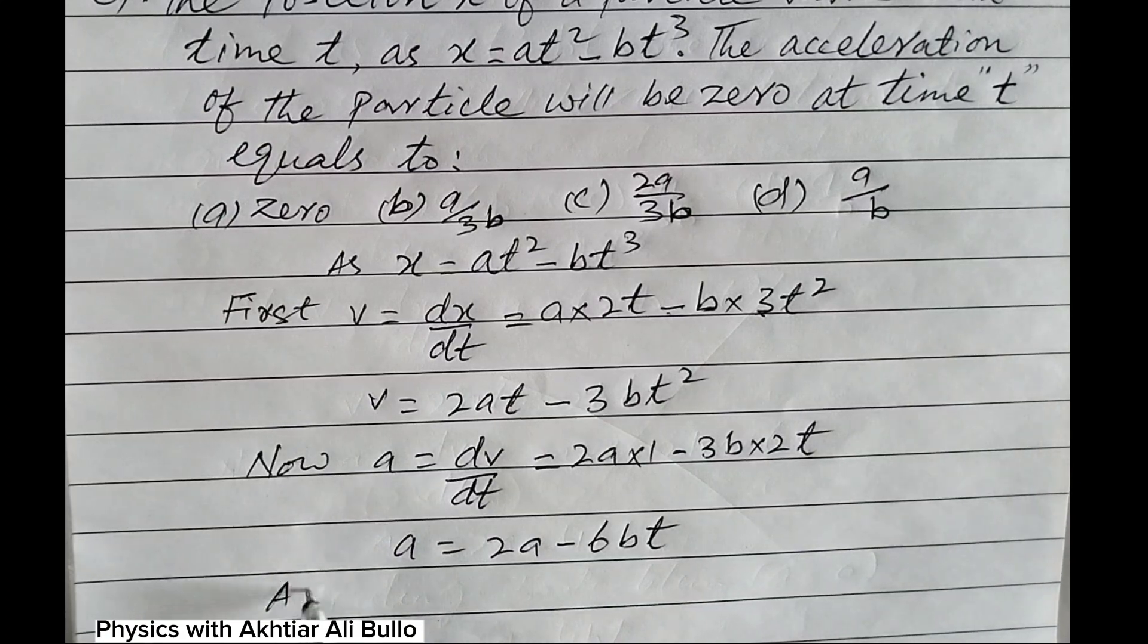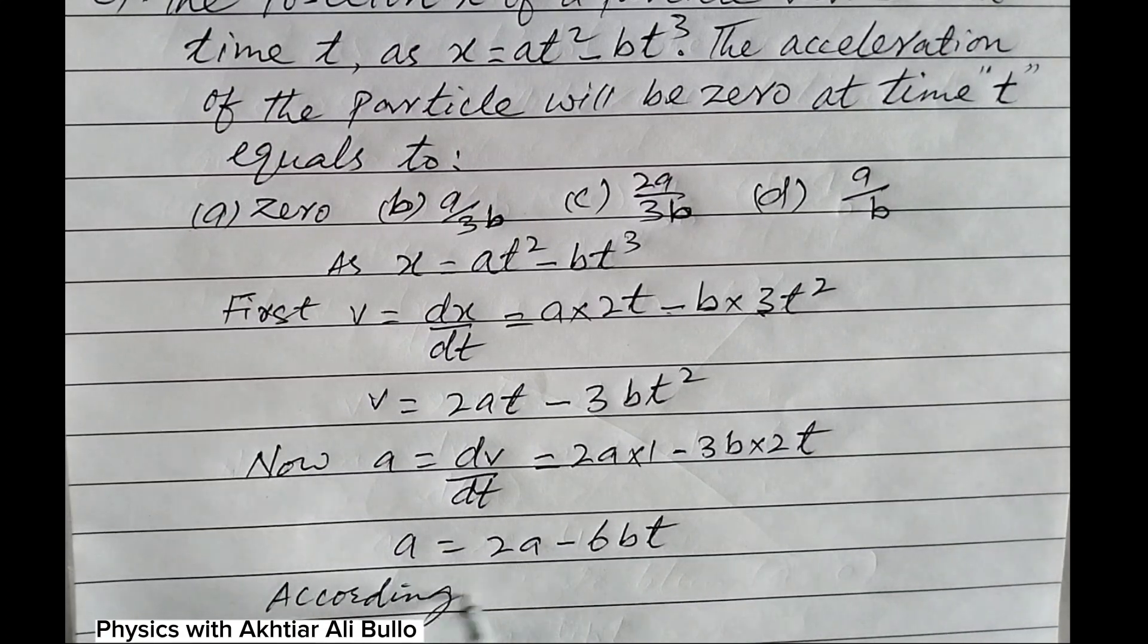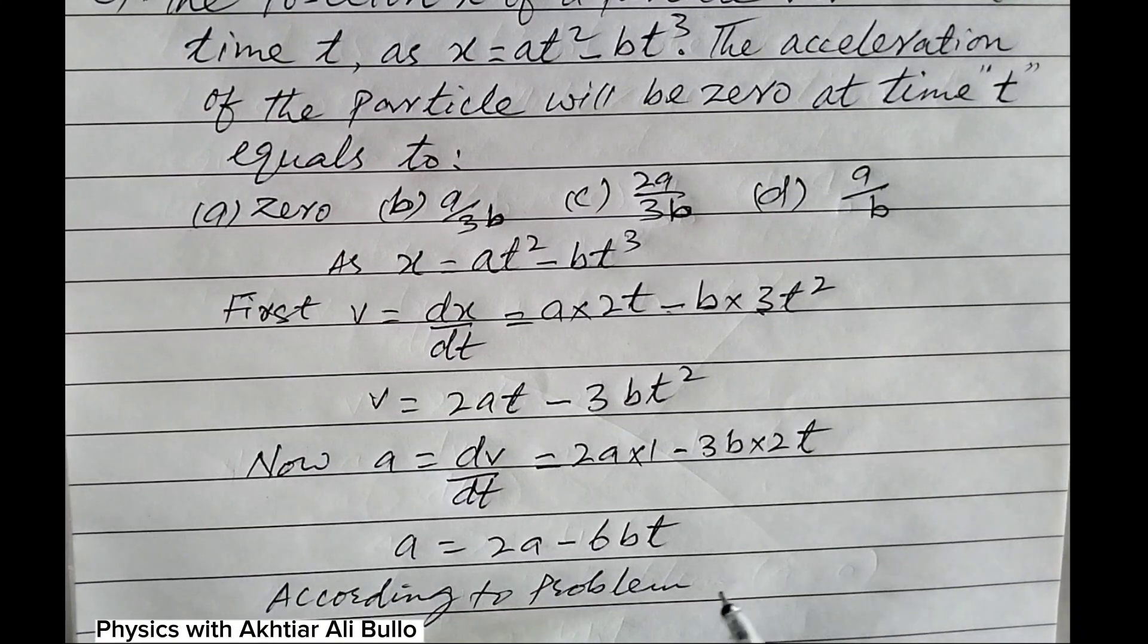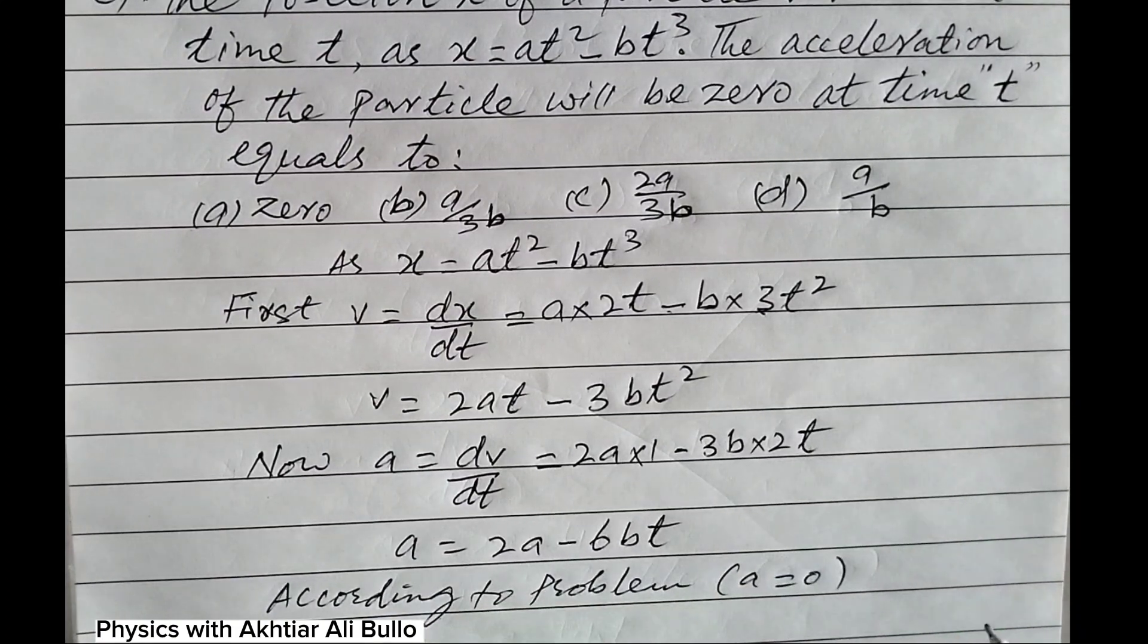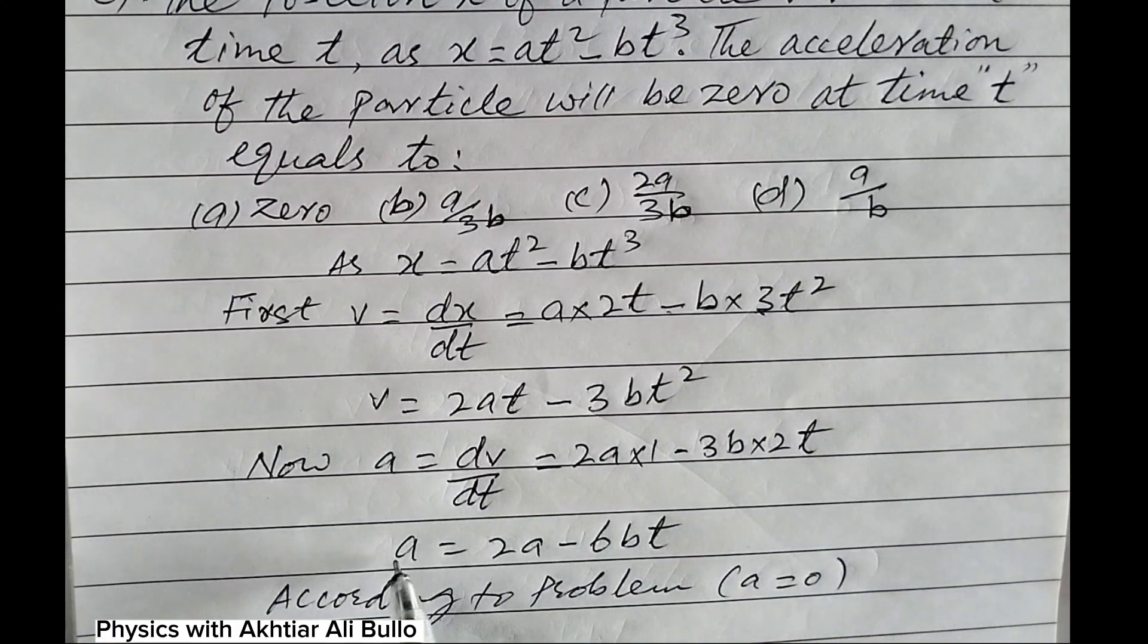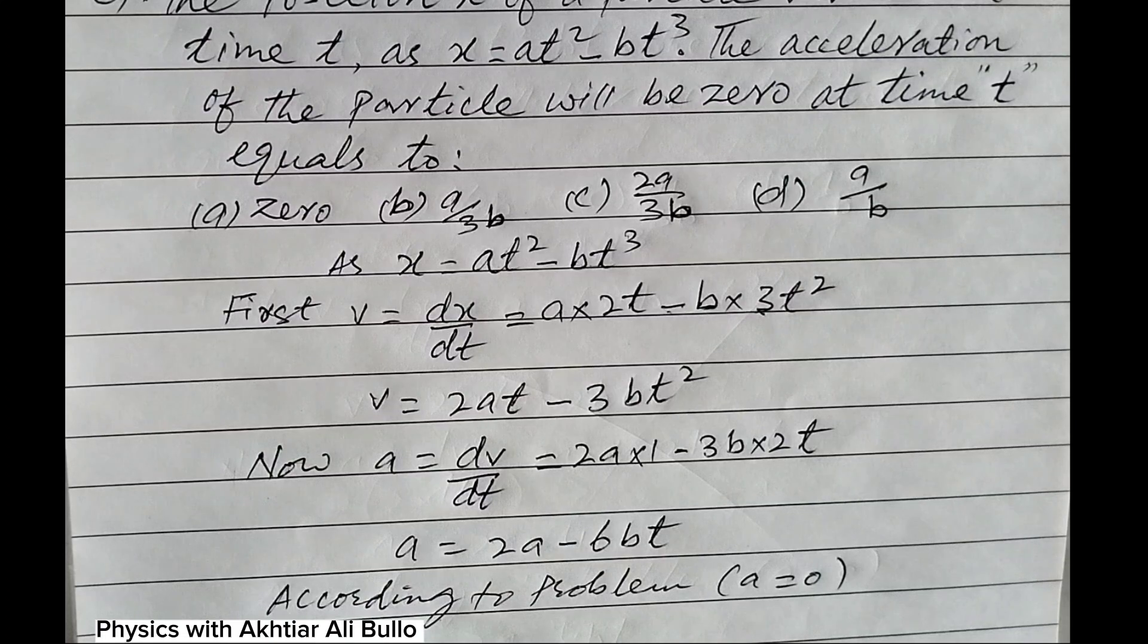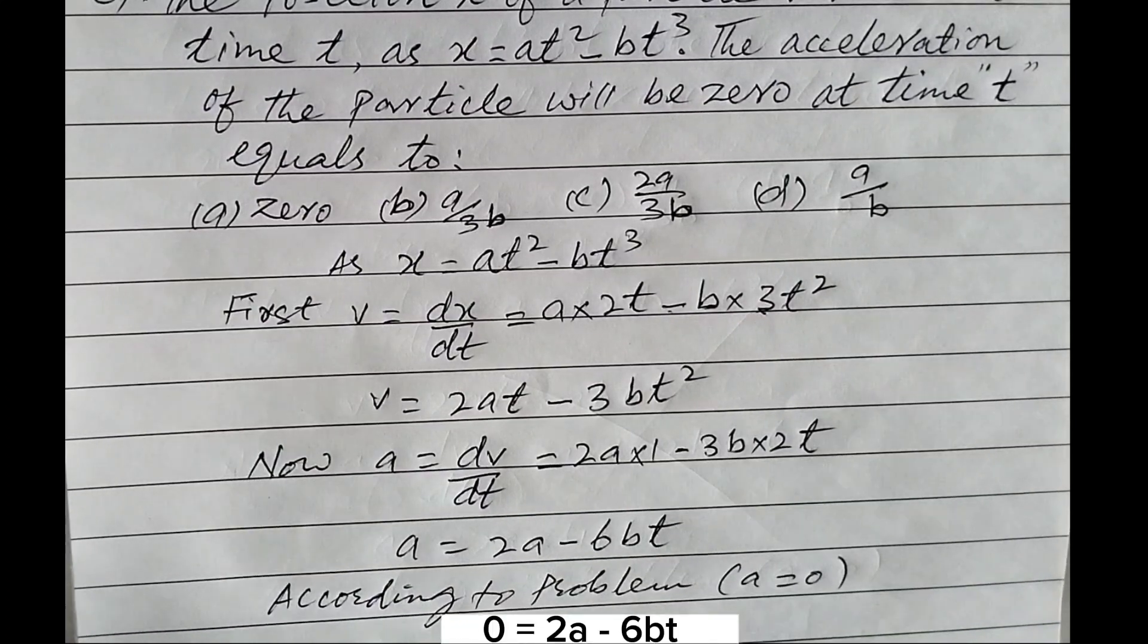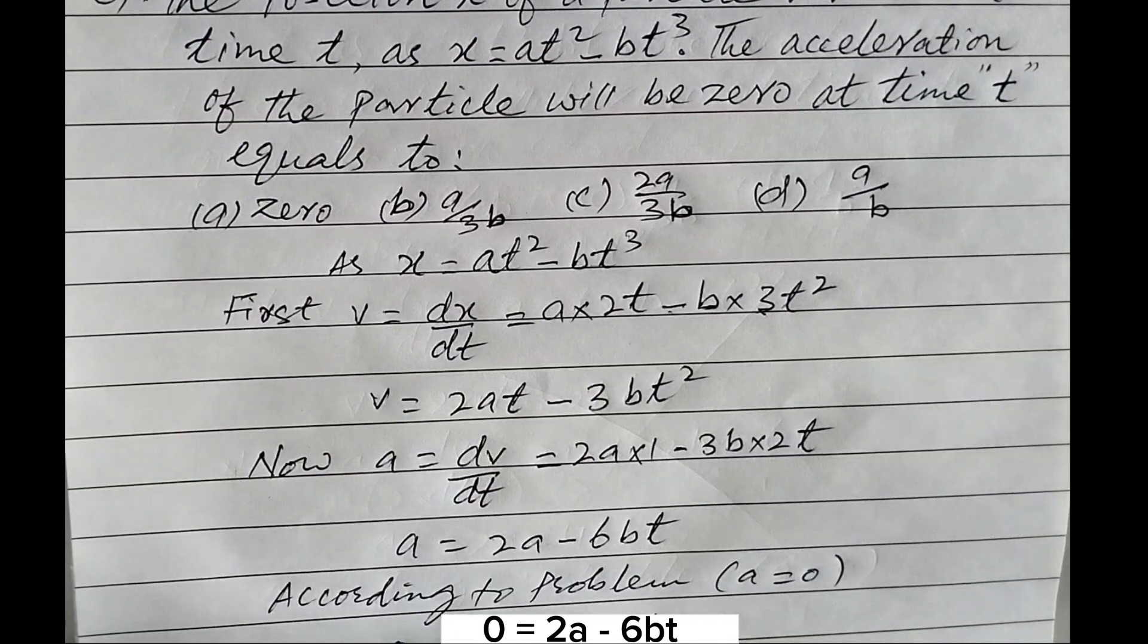According to the problem, a = 0. By placing 0 in place of acceleration, 0 = 2a - 6bt.